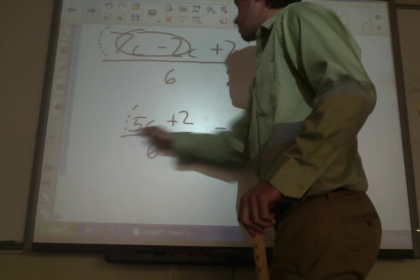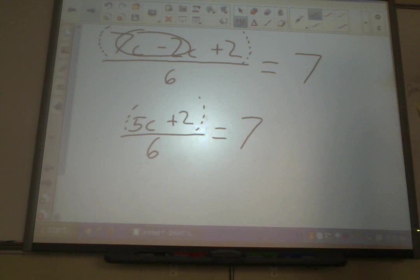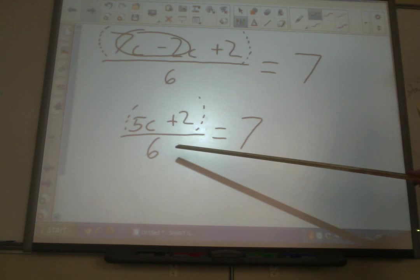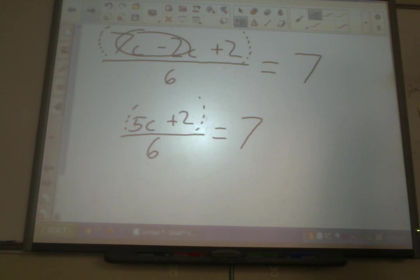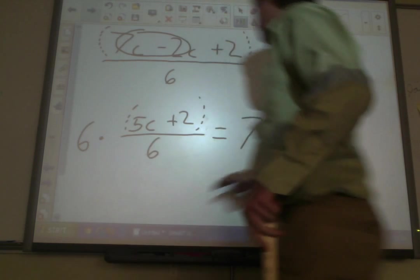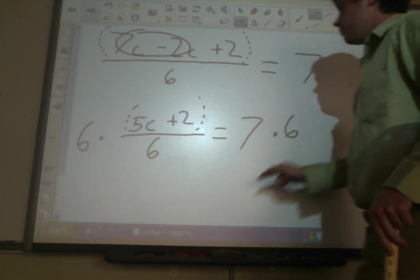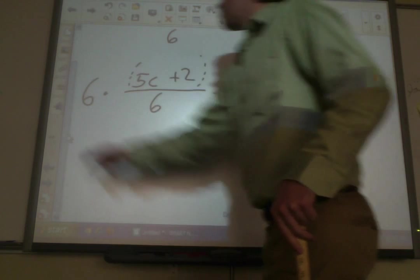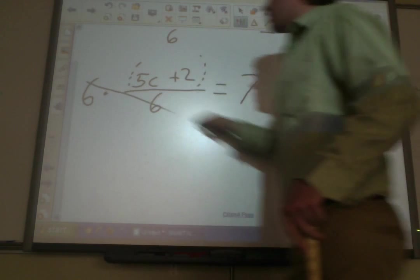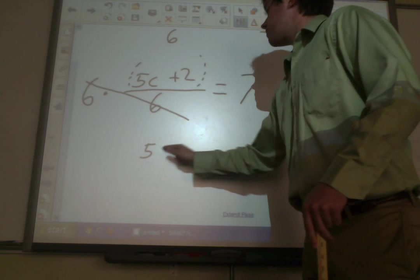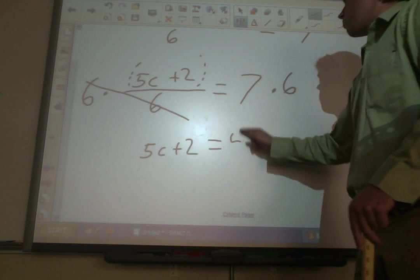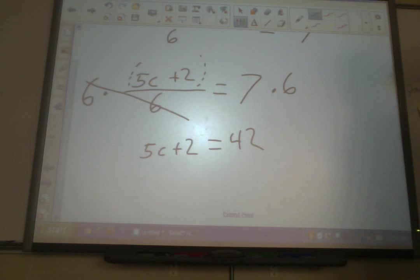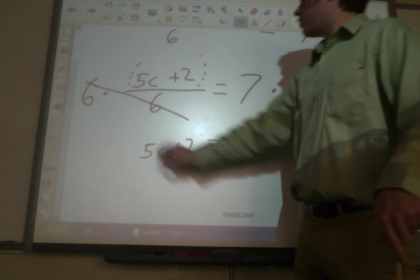We've collected all of our like terms. We only have one variable. We've got to use reverse PEMDAS. We need to get rid of the 6 by multiplying both sides times 6. 6 divided by 6. That goes away. And we have 5c plus 2 equals 42. We've done everything outside the parentheses. So, now the parentheses come off. 5c plus 2 equals 42.